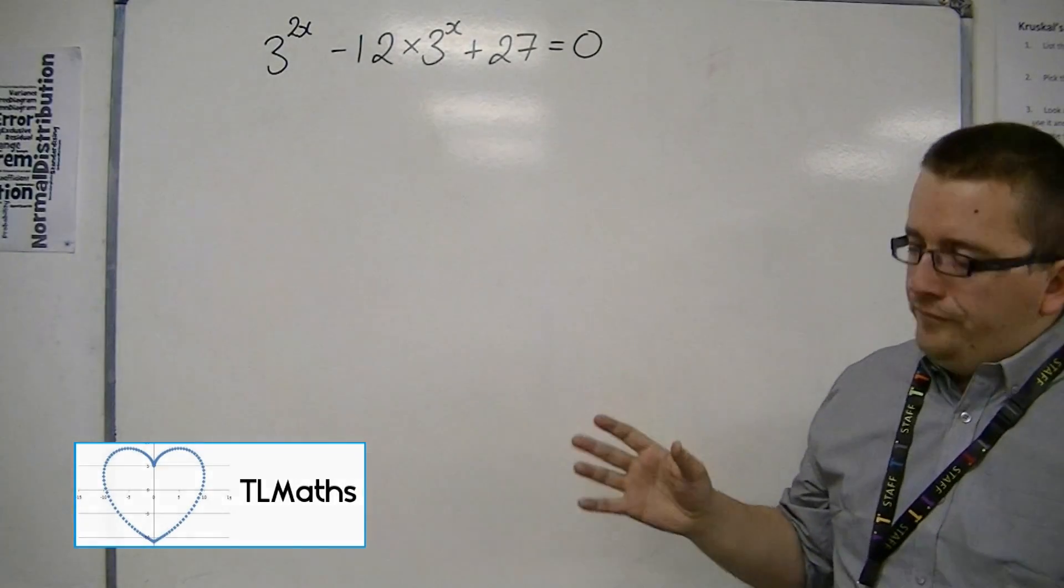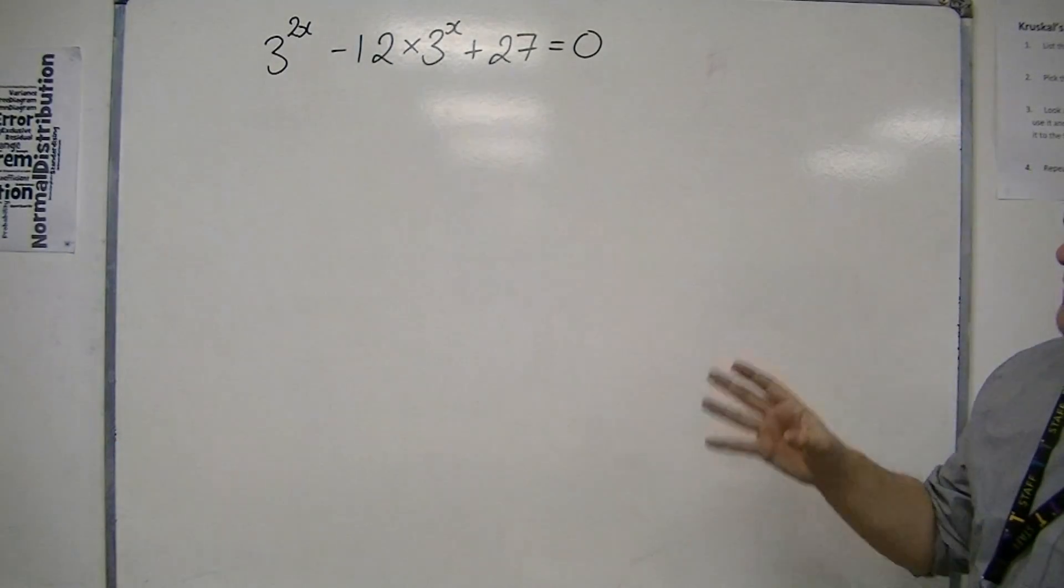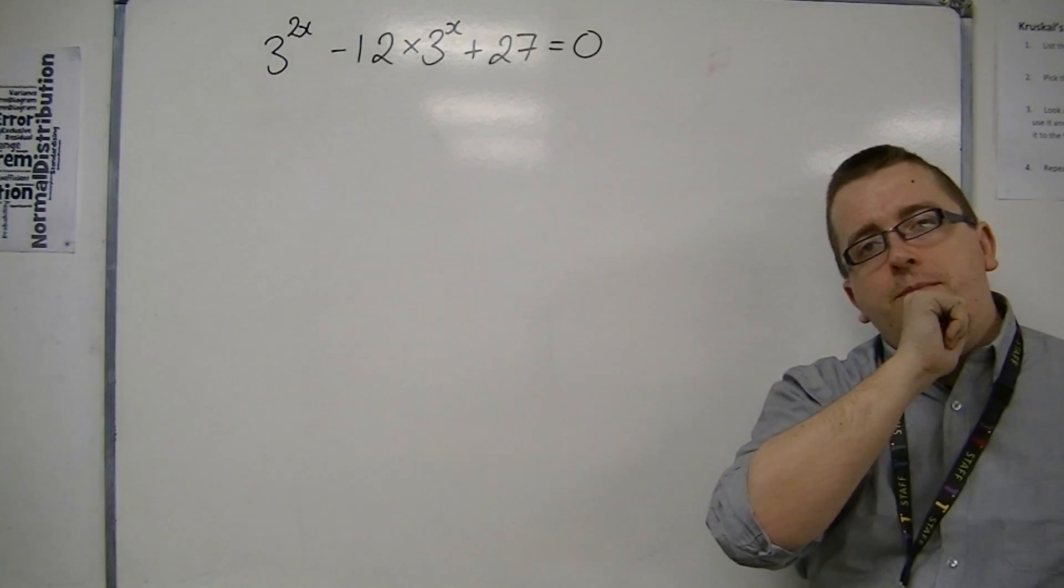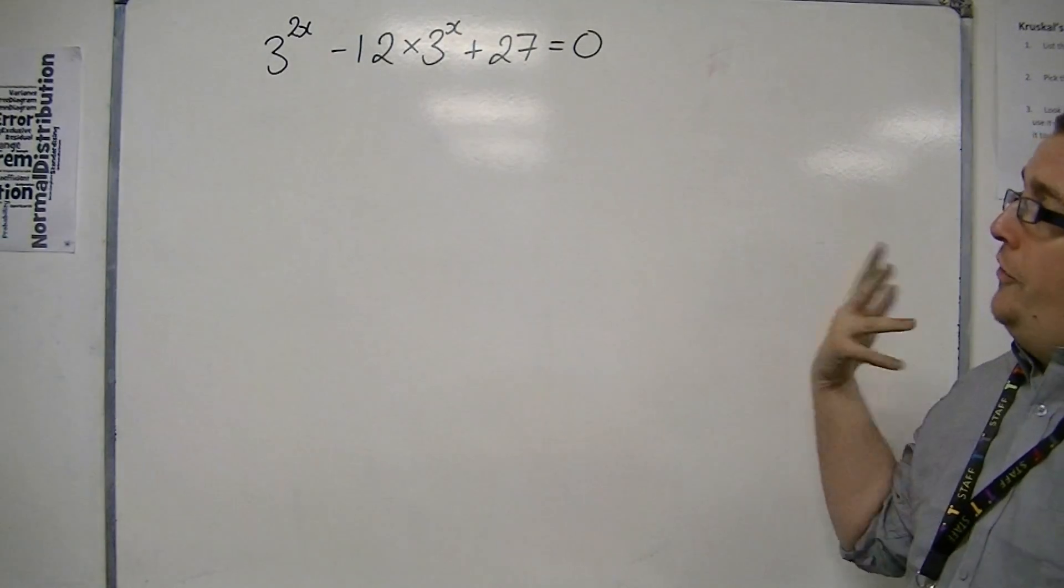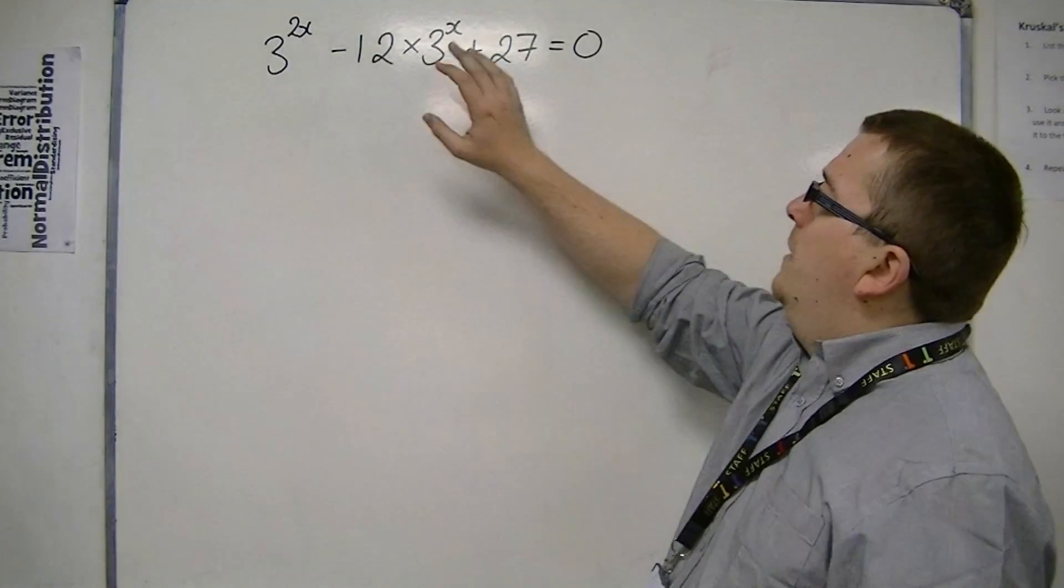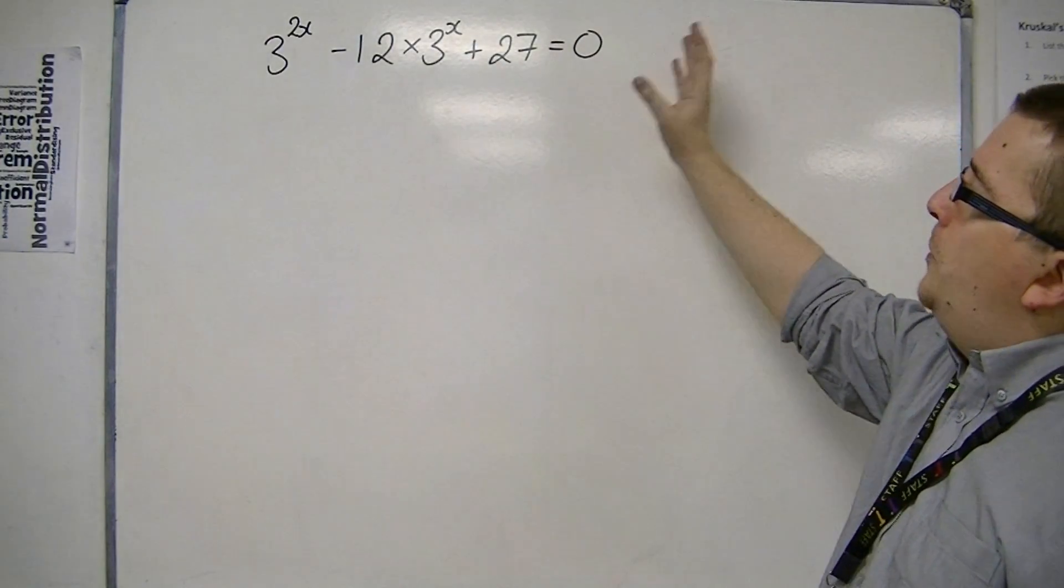With this equation, we have something that looks quite different and also quite tricky. We've got a 3 to the 2x, minus 12 times 3 to the x plus 27 equals 0.